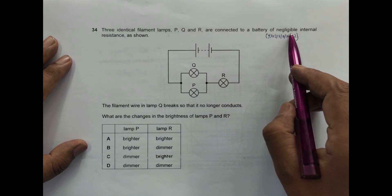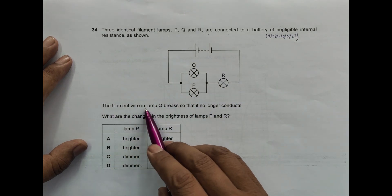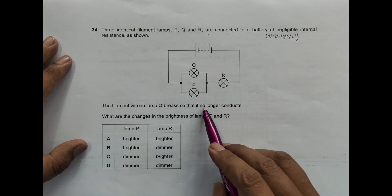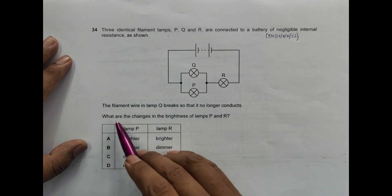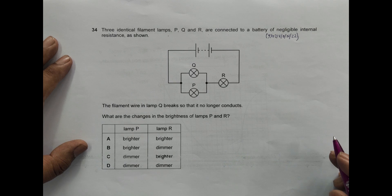a battery of negligible internal resistance as shown. The filament wire in lamp Q breaks so that it no longer conducts. What are the changes in the brightness of lamps P and R? So the brightness depends on